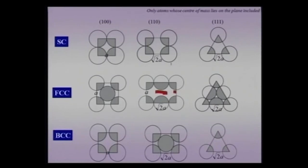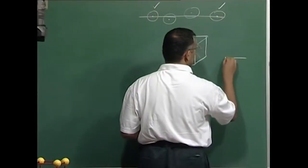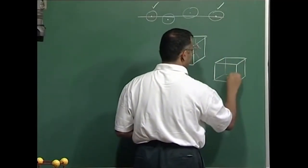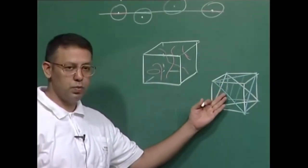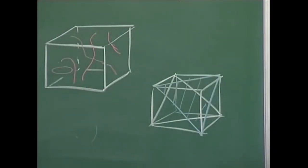In BCC, the (111) plane has the lowest density, consistent with that plane being mostly unoccupied. An important warning: when calculating planar density, the plane chosen must be space-filling — the part of the plane within the unit cell, when repeated, must fill the entire two-dimensional plane. For example, if considering the (111) plane you cannot pick a hexagonal section lying between two planes, because that is not a space-filling plane and would give erroneous atomic density values.